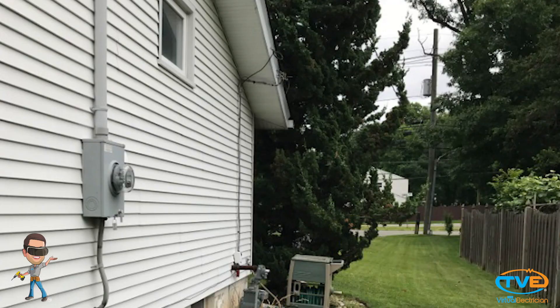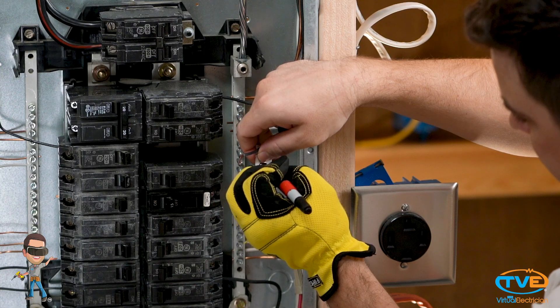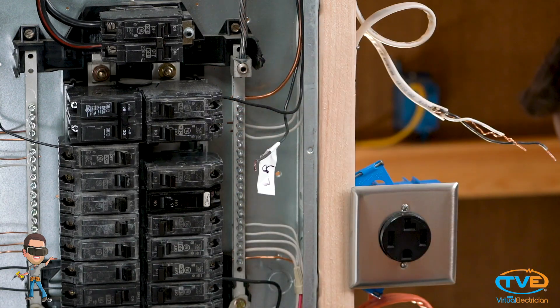Make sure the power is off to your panel. This is usually coordinated with your utility company. Remove all the circuits from the main panel, labeling them as you go.